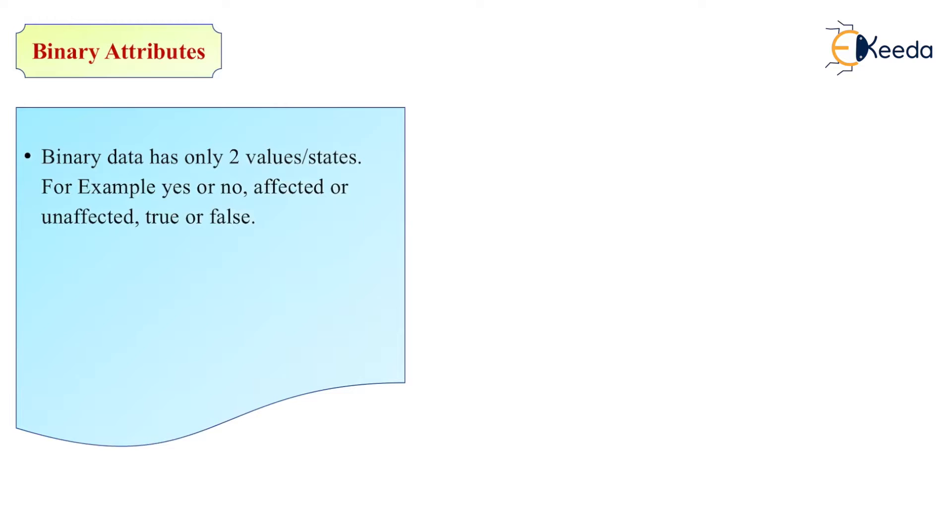Next is binary attribute. Binary data has only two values, either yes or no, or true or false. Symmetric means both values are equally important. That means we can say gender, right? Female and male. Both values are important. We cannot change those values. We cannot make any other gender available.